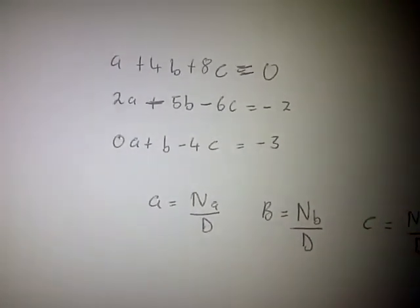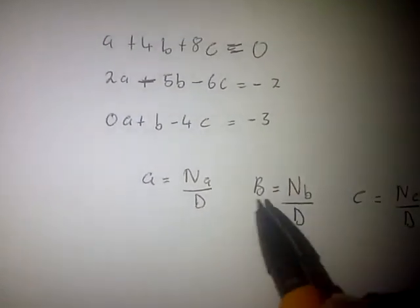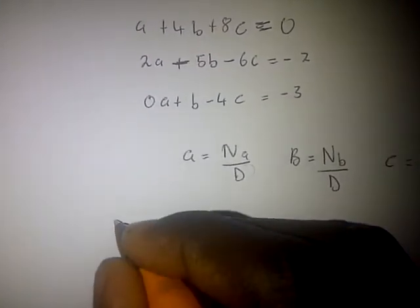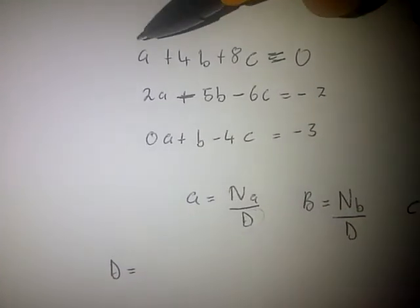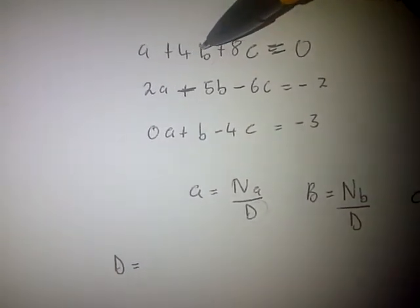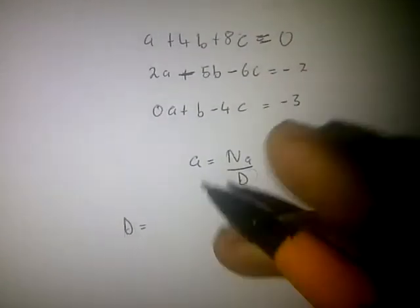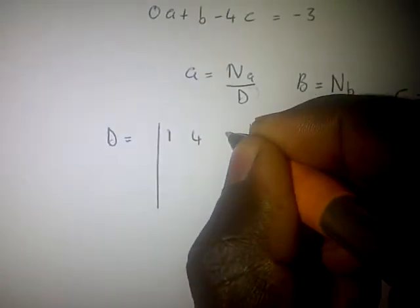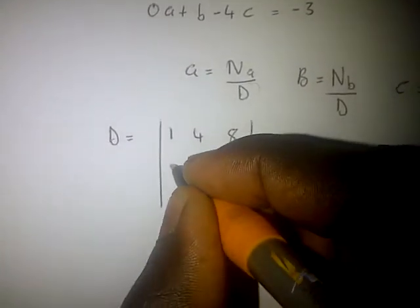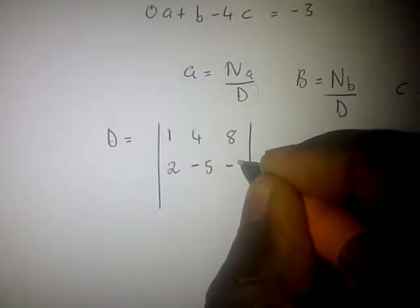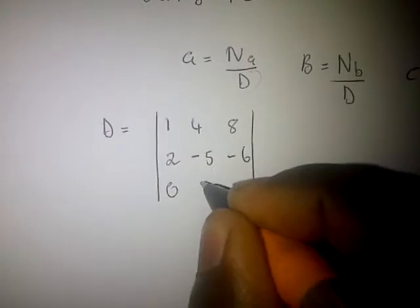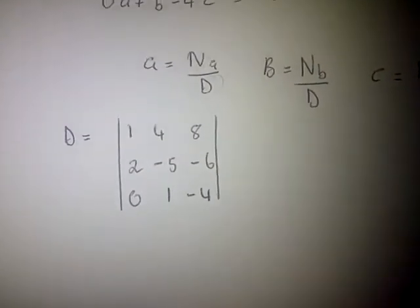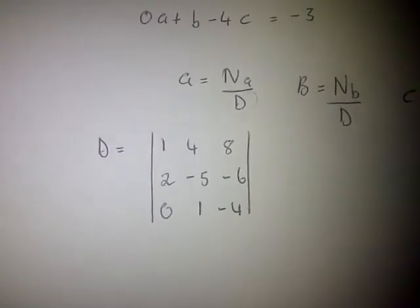The first thing we have to do is find the coefficient matrix D. We take the coefficients: for the first equation, the coefficient of a is 1, b is 4, c is 8. For the second equation: 2, minus 5, minus 6. For the third equation: 0, 1, minus 4. This gives us the elements of matrix D.